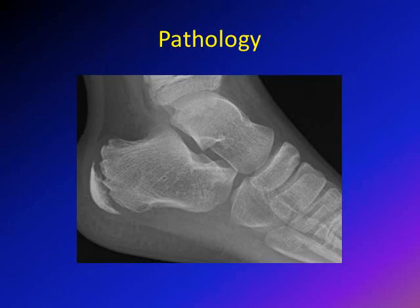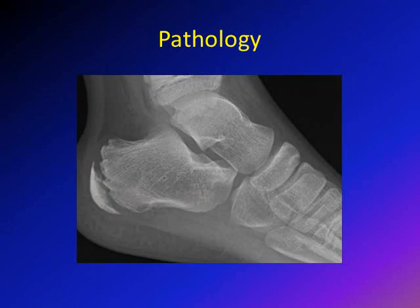Before we speak about the pathology of Severs disease, let's first speak about the anatomy of this area. This is an X-ray of the calcaneus — this is the main bone. Here is the growth plate, which allows the calcaneus to grow longitudinally, and here is the secondary ossification center. Secondary ossification centers in most bones are called apophysis. In the calcaneus, we call it the apophysis. Why? Two main reasons: first, it's not part of the joint — it does not involve forming any joint.